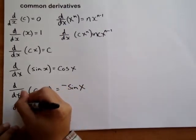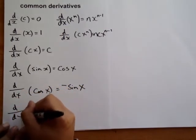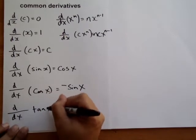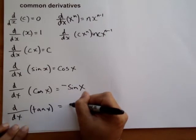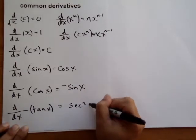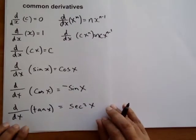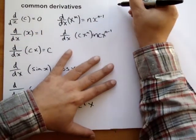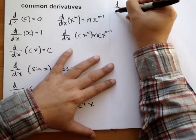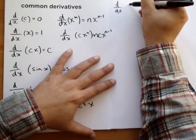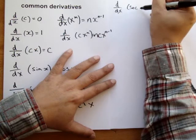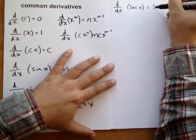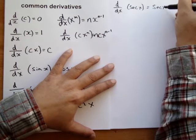The derivative of tan x is sec squared x. The derivative of sec x is sec x tan x.